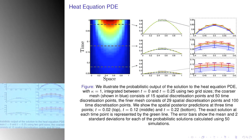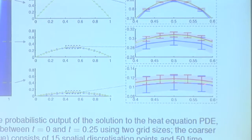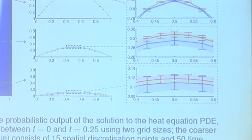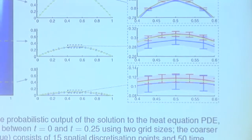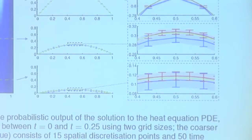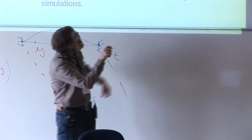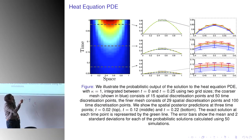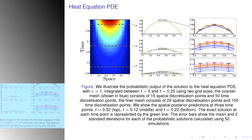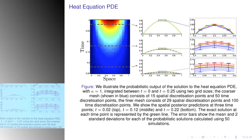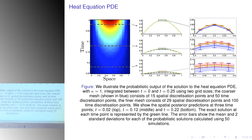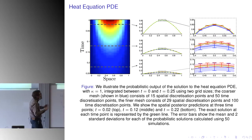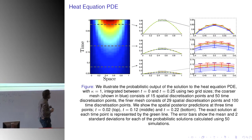With the coarse grid, the inflation of uncertainty — the inflation of the posterior variance — ensures that the analytic solution is within the error bars, within the high density regions of the posterior. This shows us that our forward model, the stochastic process, the sampling procedure, is doing what it should do.